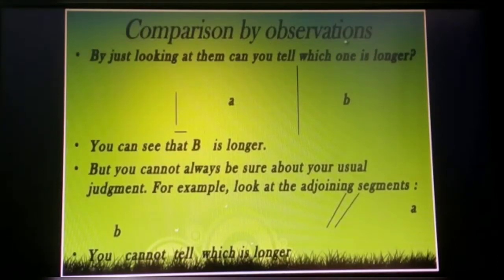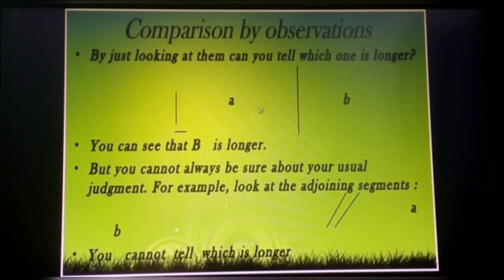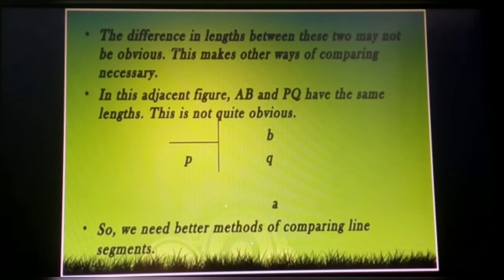Now comparing by observation. By just looking, can you tell which one is longer — A or B? You can see that B is longer than A. But you cannot always be sure about your visual judgment. For example, look at the adjoining line segments A and B — you cannot tell which is longer. When we find the comparison, A and B in the first figure show that B is longer than A. But when we try to find the measure, we cannot always tell which is longer.